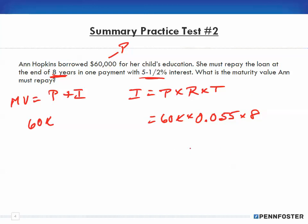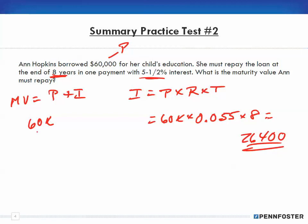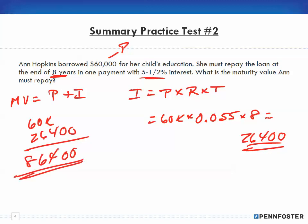To clarify: days use 360 (ordinary) or 365 (exact); months go over 12; years go over 1 — and we don't need to write that. So $60,000 × 0.055 × 8 = $26,400 in interest. Adding that to the principal: $60,000 + $26,400 = $86,400 is the maturity value Ann must repay. I'll stop here and cover problems three, four, and five in the next video.